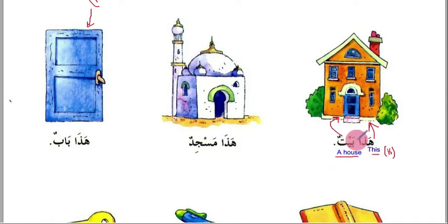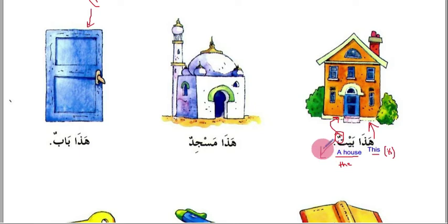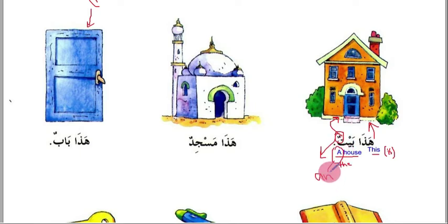We say 'a house' and not 'the house' because of the tanween. Tanween is the sound at the end — 'tun'. When you have tanween on a noun, it shows that the noun is indefinite. When translating an indefinite noun from Arabic to English, you add 'a' or 'an', because those are the indefinite articles of English. So 'hadha baytun' means 'this is a house'.